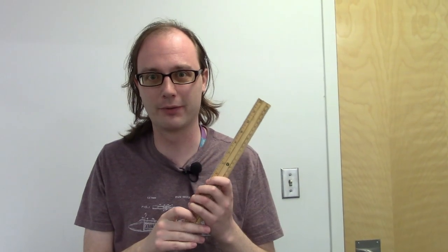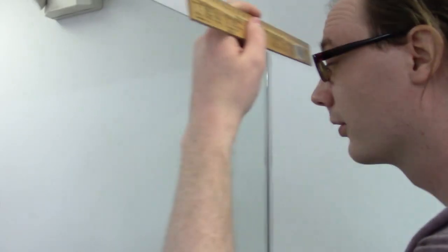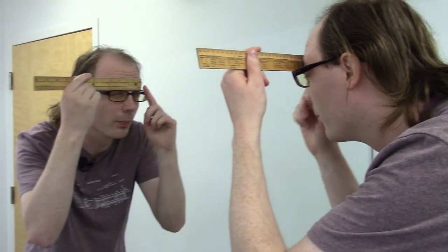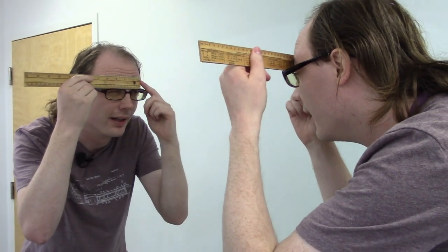All right. So the next step is to measure the distance between my left pupil and my right pupil. And I've got a ruler to do that. And it really helps if I have a mirror. So I'm going to put this right up to my head.